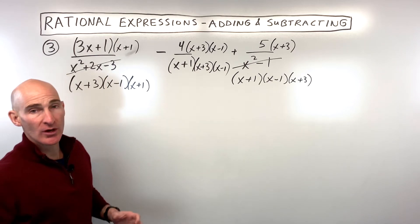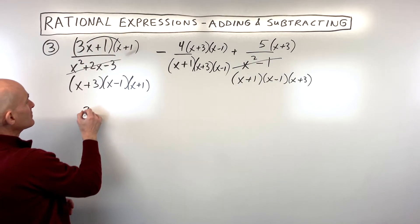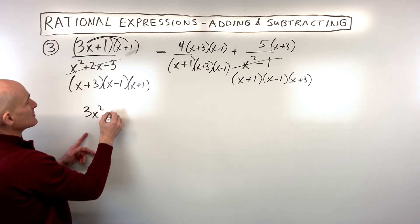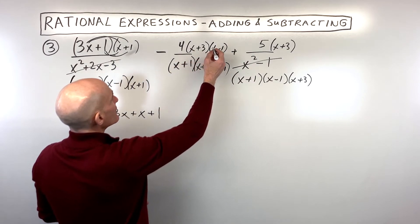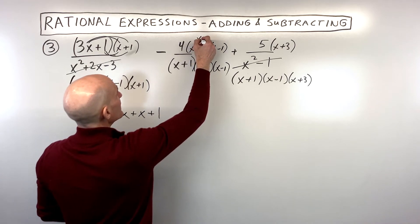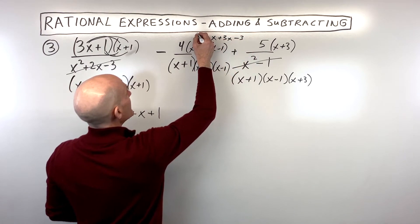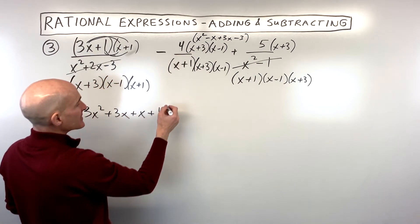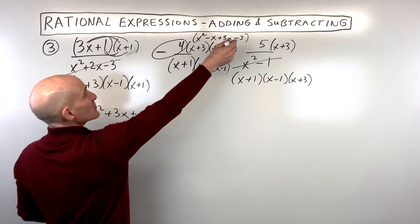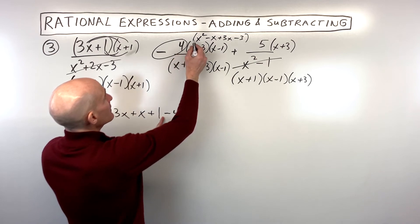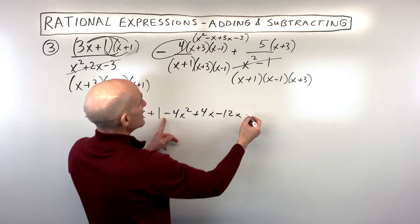We can now combine these all into one fraction with that common denominator. First, let's simplify the numerators. We've got 3x squared, plus 3x, plus 1x, plus 1. Over here, multiplying those together first gives us x squared minus x plus 3x minus 3, and that whole thing is multiplied by 4. Notice where this minus sign is — this is where students sometimes go off track. You can think of this as a negative 4 and distribute: negative 4x squared, positive 4x, negative 4 times positive 3x is negative 12x, and negative 4 times negative 3 is positive 12.